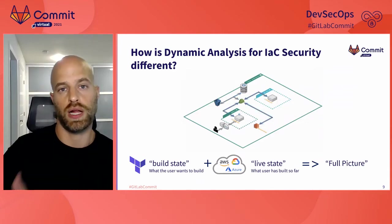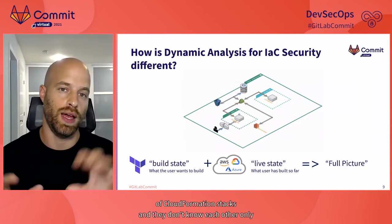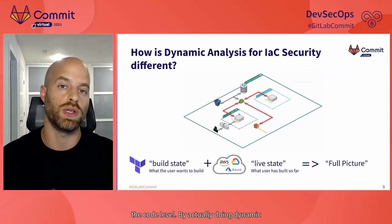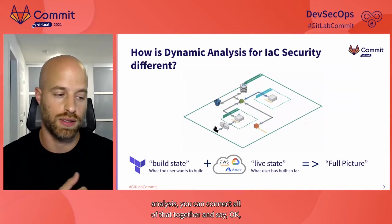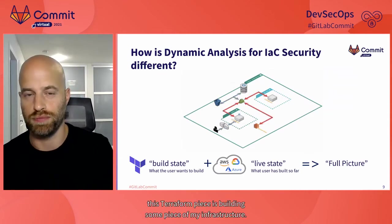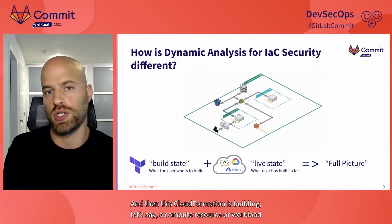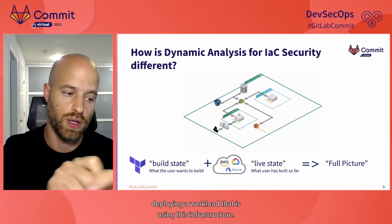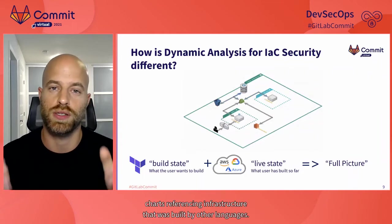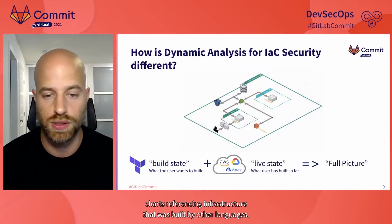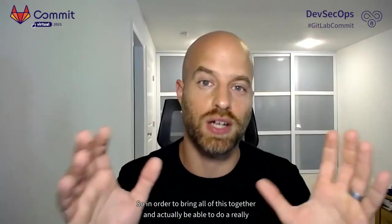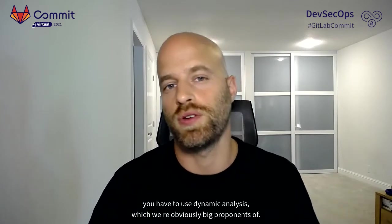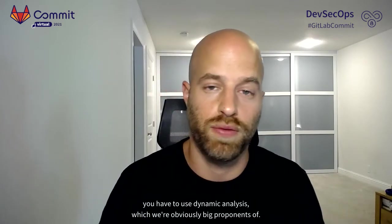For example, you can see that this EC2 is going to be deployed in a subnet, the subnet is configured elsewhere, and the subnet has the public IP address allocation flag enabled — you can only see that if you connect the dots. In addition, this allows you to connect the dots between multiple code repositories. Maybe you've got a few Terraform workspaces and a bunch of CloudFormation stacks — they reference each other only through IDs. By doing dynamic analysis you can connect all of that together — see how a Terraform piece builds infrastructure and a CloudFormation piece deploys a workload using that infrastructure, including Helm charts referencing infrastructure built by other languages.